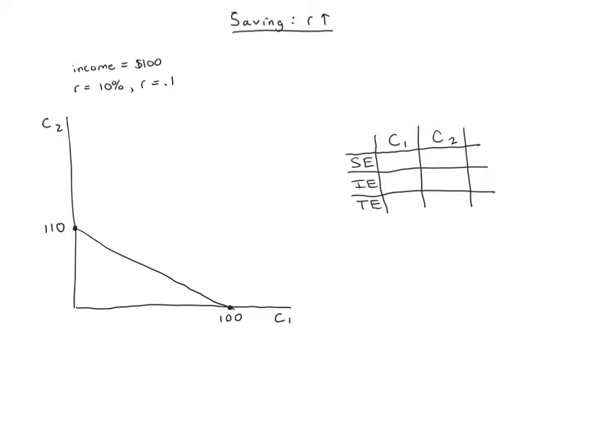So let's go ahead and draw in an indifference curve and show some optimal bundle here. Let's say that the optimum is right here. We'll say that it's where you consume say sixty dollars in period one and then you can see here implicitly on the diagram our savings. If we're consuming sixty dollars in period one then we must be saving forty dollars because a hundred minus our consumption in period one gives us our savings. And then if we save forty dollars we'll be able to consume that forty dollars in the next period plus the interest income which will be ten percent of the savings or four dollars. So our optimal point is sixty, forty-four.